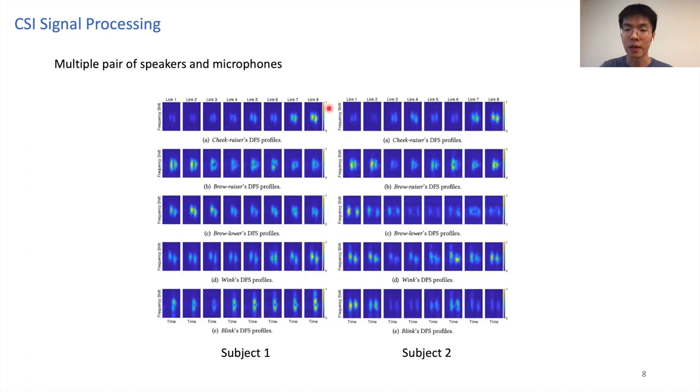Except for the time frequency domain, since our eyewear has four mics and two speakers, which sum up to eight links, different UFAs show distinct characteristics in the link domain as well. For example, a cheek raise shows high energy at the last two links, while a brow raise shows high energy in the first two links.